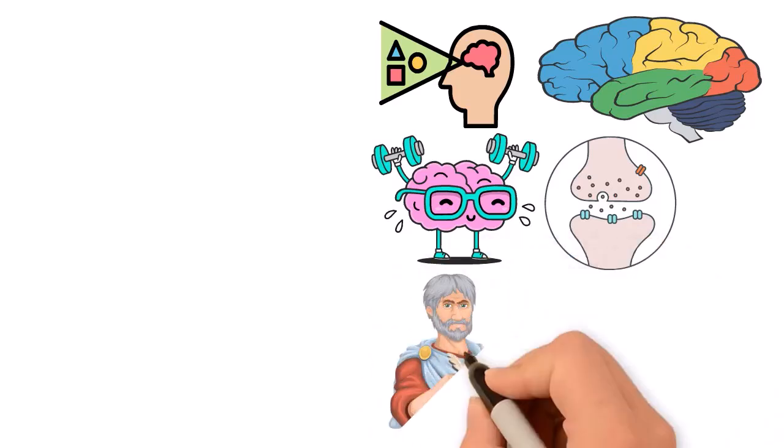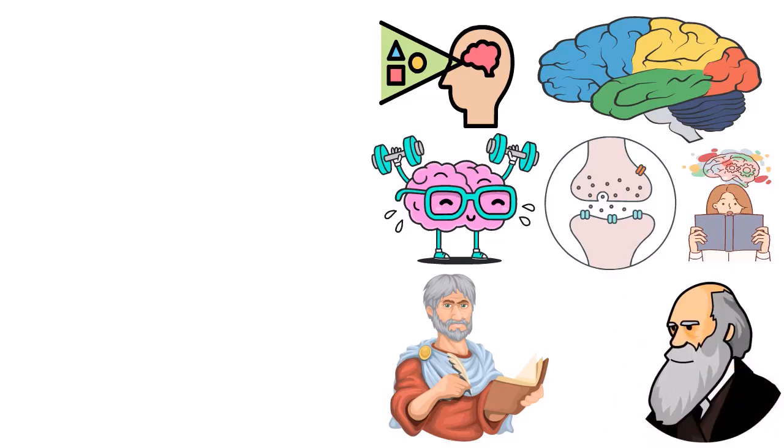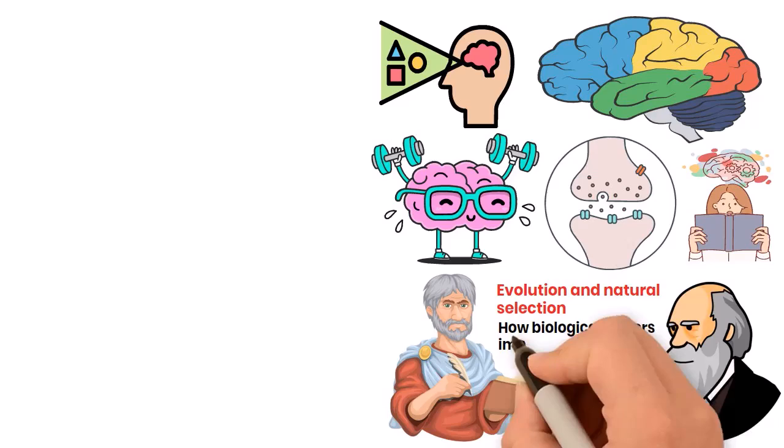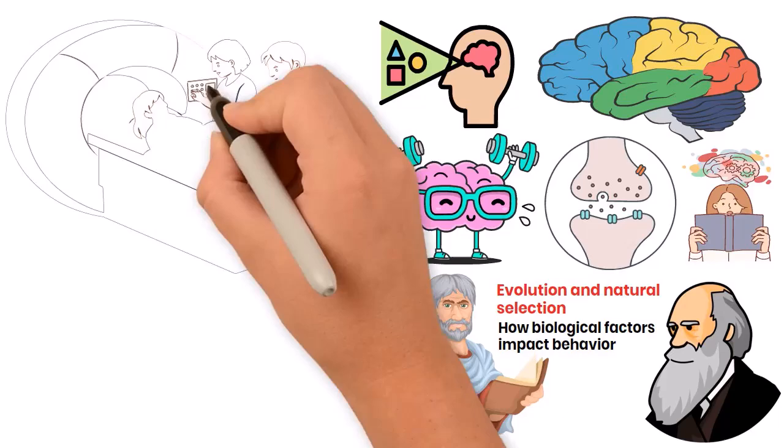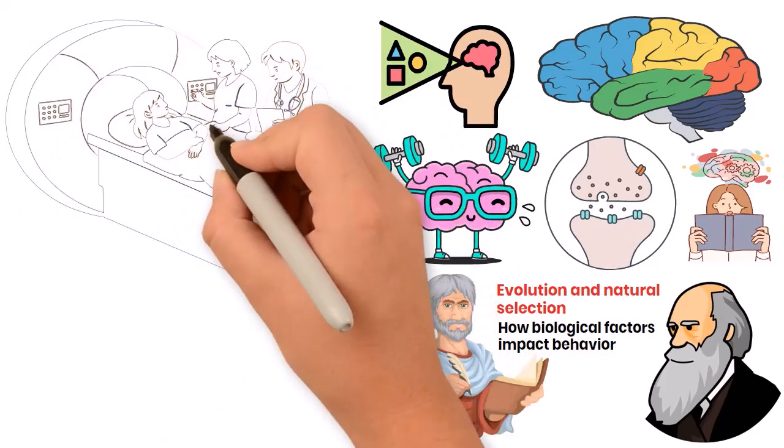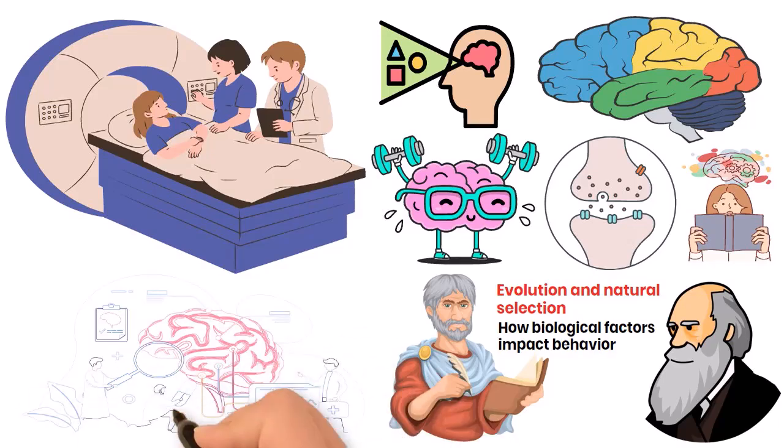Originally rooted in ancient philosophy, biological psychology truly began to flourish in the 19th century with the advent of modern science. Early work by Charles Darwin on evolution and natural selection laid the foundation for understanding how biological factors impact behavior. By the 20th century, advancements in technology and neuroscience, including brain imaging techniques like MRI and PET scans, allowed scientists to explore the brain in unprecedented detail.